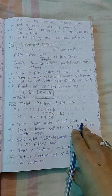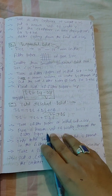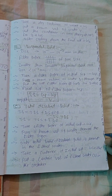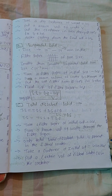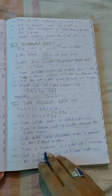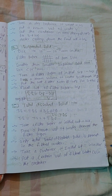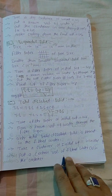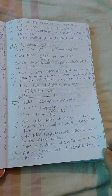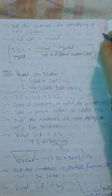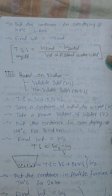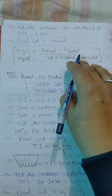Take a filter paper of initial weight W_i. Pass a known volume of water through the filter paper. Only the total dissolved solids remain in the filtrate water. Take a container of initial weight W_i and pour a certain volume of filtrate water V into it. Dry using the oven dry method at 104 degrees Celsius for 3 to 4 hours. Final weight equals W_F. TDS in mg per litre equals (W_F minus W_i) divided by volume of filter water.